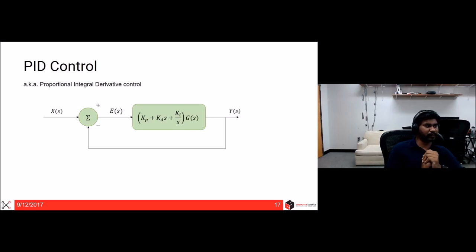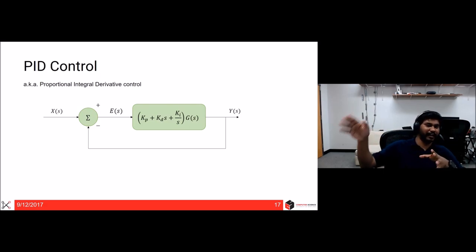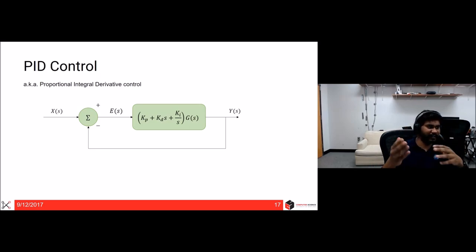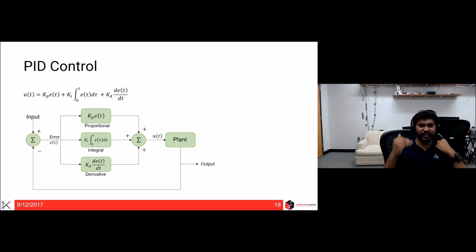Now PID control: the full controller function is Kp + Kd·s + Ki/s. In the time domain, the control output is u(t) = Kp·e(t) + Ki·∫₀ᵗ e(τ)dτ + Kd·(de/dt). The integral term sees how the error has varied over time; the derivative term predicts where the error is heading; and Kp scales linearly with the current error.